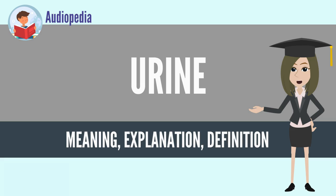Some animals use it to mark their territories. Historically, urine was also used for gunpowder production, cleaning, tanning of leather, and dyeing of textiles. Human urine and feces are collectively referred to as human waste or human excreta, and are managed with a sanitation system.